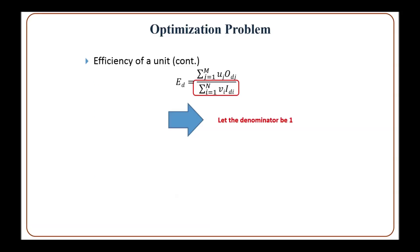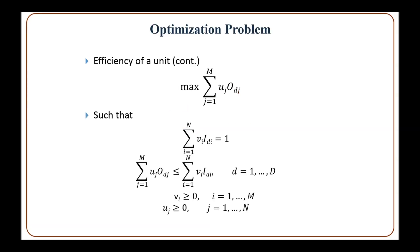In order to maximize the efficiency, we let the denominator be one and maximize the numerator. We can also fix the numerator and minimize the denominator. And from there we get to the optimization problem.